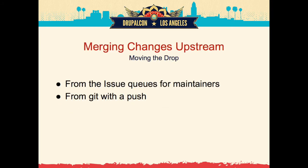Once we want to merge changes upstream, maintainers could use a button in the issue queue - just like on GitHub where you click to merge a change. We can add a button that says this is good to go, it's RTBC, everybody's happy - push. It would merge and commit to the production branch. Or they could do the same thing with Git directly - whatever tool people are used to working in, web interface or Git, they'd be able to merge these changes upstream.